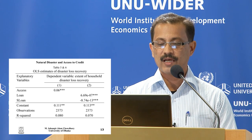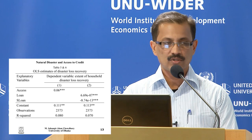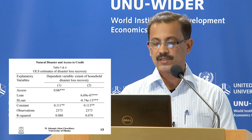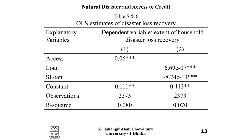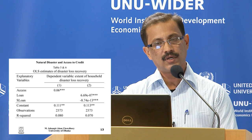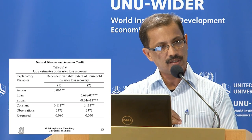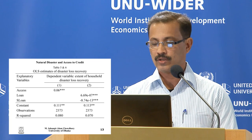Turning to the results — only the key variables are reported here; full results are in the paper. From Model 1, the access variable is statistically significant, meaning access to credit significantly helps households in recovering their losses. From Model 2, the loan and loan-squared terms confirm a non-linearity: loss recovery initially increases with loan size but then diminishes.